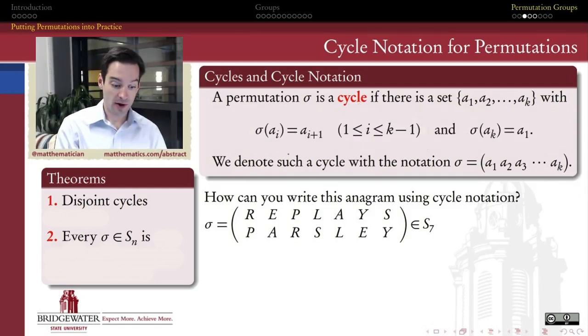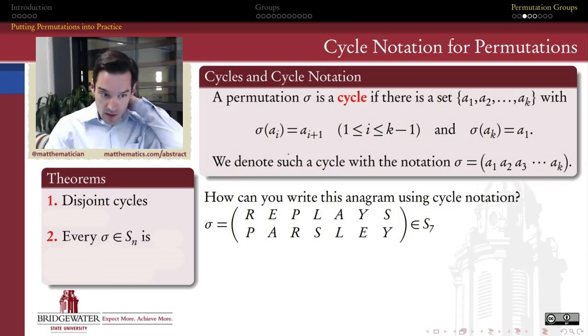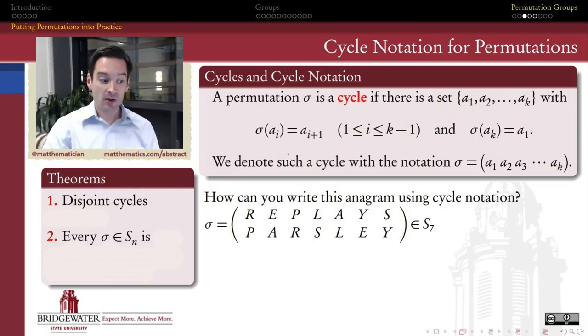So, if we wanted to write that formally, we would say that the image of the ith element is the i plus first element, with the exception of the last, the AKth element, and then its image is A sub one. So we'll not only call this a cycle, we'll also call it a K cycle, or a cycle of length K, if you like, if we find it helpful to say exactly how many elements there are here that we're permuting. So, that's what a cycle is.